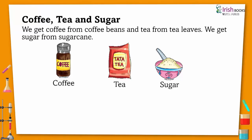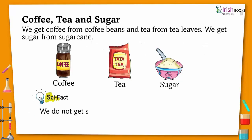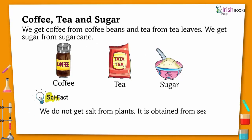We get coffee from coffee beans and tea from tea leaves. We get sugar from sugar cane. Scientific fact: we do not get salt from plants — it is obtained from sea water.